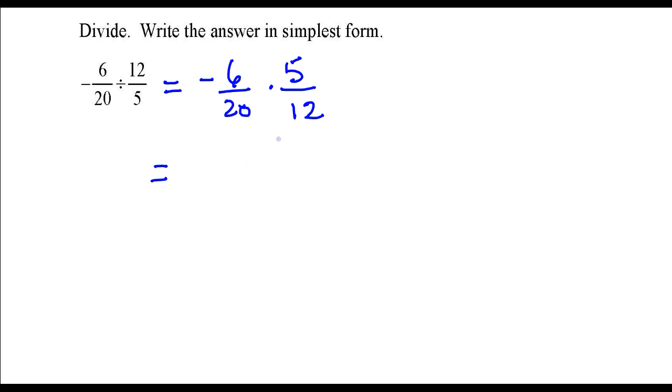I'm going to multiply the two fractions together, so I'm going to multiply numerators together and I'm going to multiply denominators together. In the numerator of our fraction we have negative 6 times 5, in the denominator we have 20 times 12.